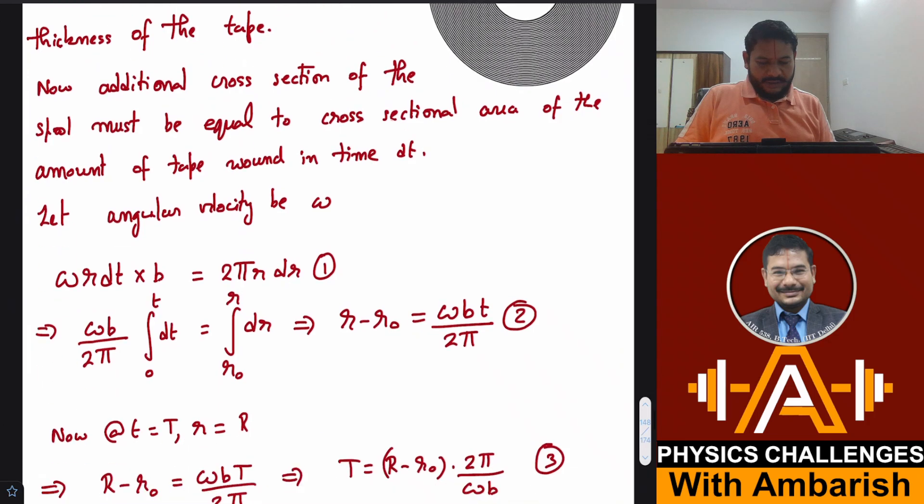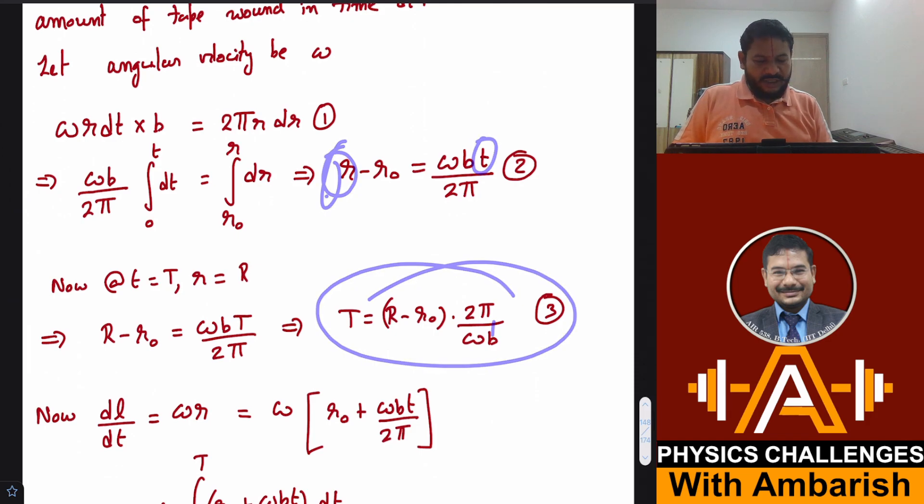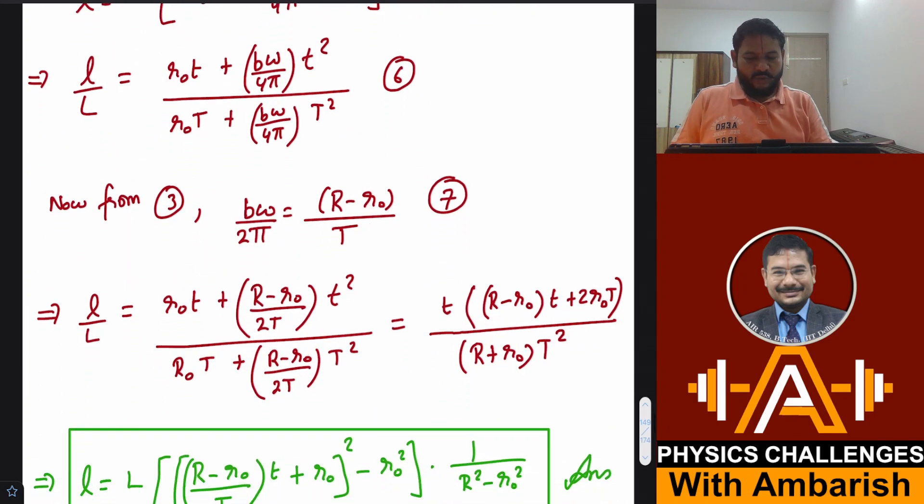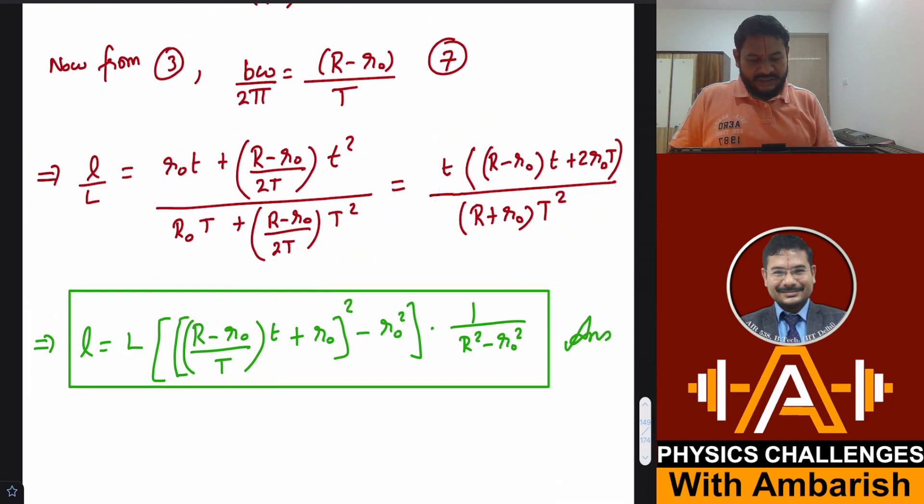From equation 3 you get b omega upon 2π from this equation. I have put b omega by 2π substituted as R minus r0 by T and this is what you get. After that there's some algebraic simplification. Just for finding small l you can take capital L over there and if you want you can do a little more simplification to match the answer given at the back. This is what you get, and then you rearrange the terms and this is the final answer you get. You can verify easily that this is equal to this. I subtracted the two and I got zero.